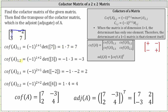Cofactor A sub one comma two is equal to negative one raised to the power of one plus two. And if we eliminate row one, column two, we have the one by one matrix with an entry of three, giving us times the determinant of the one by one matrix. We have the cube of negative one, which is negative one. The determinant of the one by one matrix with an entry of three is three.